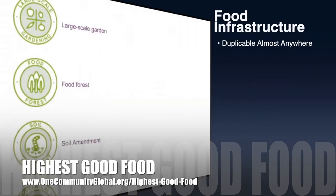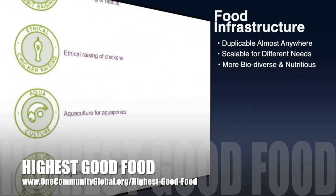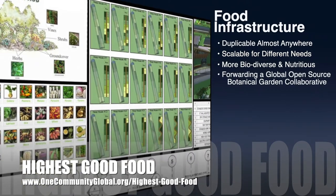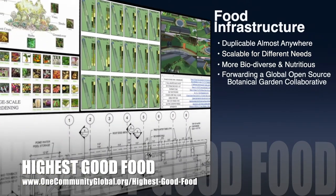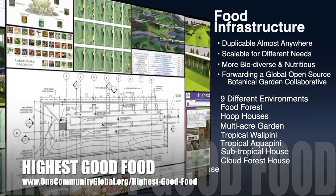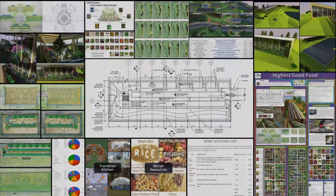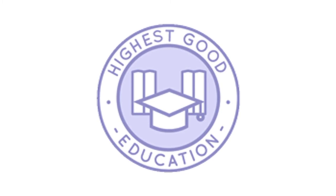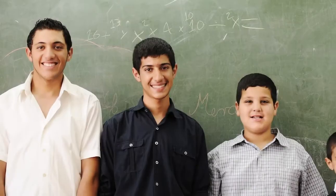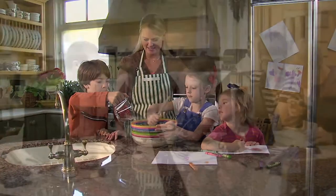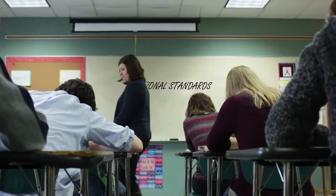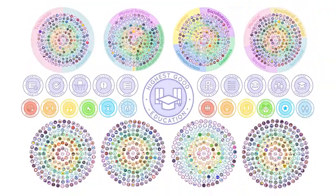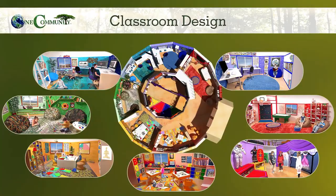One Community's approach to highest good food is duplicable almost anywhere, scalable for different needs, more biodiverse and nutritious, part of forwarding a global open source botanical garden collaborative, and includes nine different free shared and duplicable growing environments. The next component is highest good education — this component is complete and pretty much ready to launch once we're on the property. One Community's approach to highest good education is designed for all age groups, adaptable to any schooling environment, inspiring and fun for all participants, and includes national standards, all subjects, lesson plans, teaching strategies, learning strategies and tools, classroom design, and more.